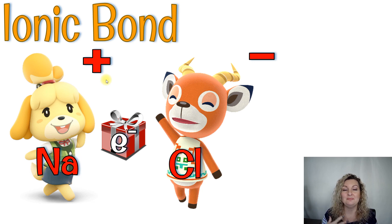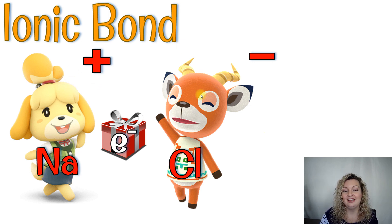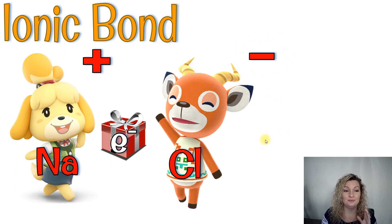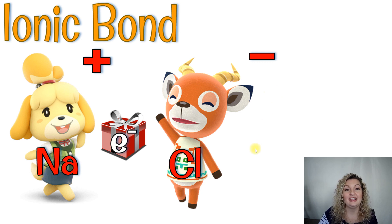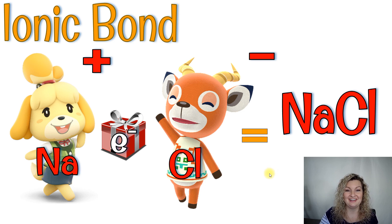Now sodium is left being mostly positive by one, and chlorine has taken on an extra electron, so now it is negative by one. They both become ions. Sodium is now a cation, chlorine is now an anion. And because positives and negatives attract — opposites attract — they will cling to one another and create an ionic bond. In this case, we end up getting NaCl, which stands for sodium chloride, or in other words, regular table salt.